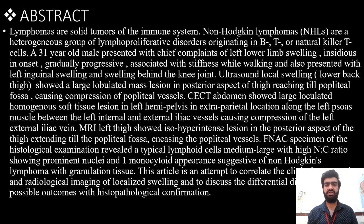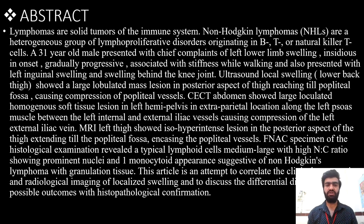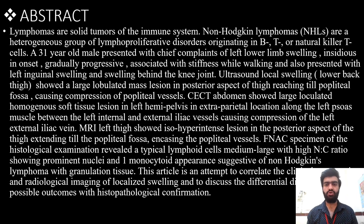A 31-year-old male presented with chief complaints of left lower limb swelling, insidious in onset, gradually progressive, associated with stiffness while walking. He also presented with left inguinal swelling and swelling behind the knee joint. USG of the local swelling showed a lobulated mass lesion in the posterior aspect of the thigh reaching till the popliteal fossa, causing compression of the popliteal vessels.